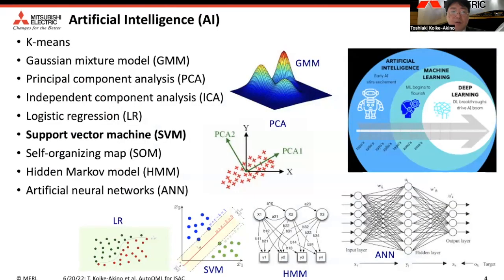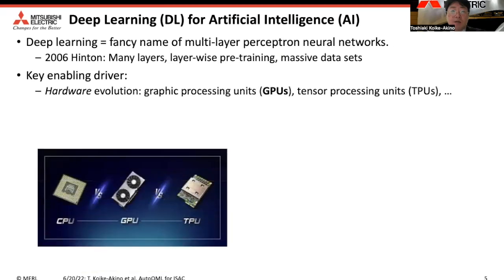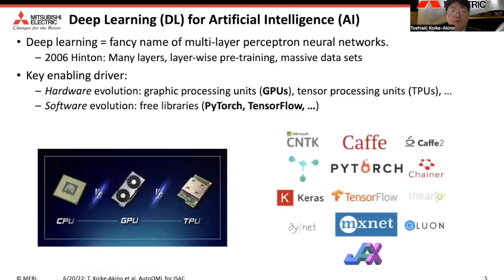There are many AI technologies, including classical machine learning like SVM and recent deep learning. We focus on quantum machine learning as both a deep learning technology for AI. Deep learning AI has been an important technology since 2006, Hinton's paper. There are two key enabling drivers: one is hardware evolution like GPU, and the second is software, like PyTorch, TensorFlow, and many free libraries.